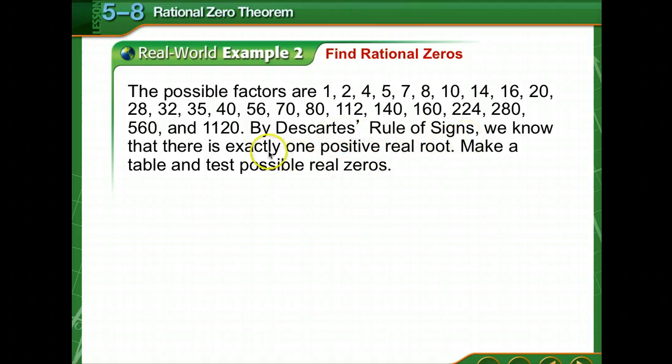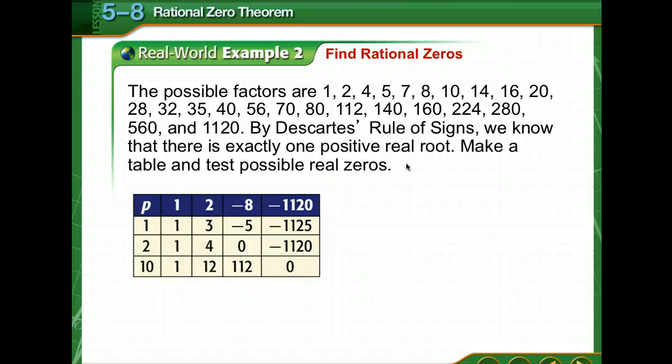By Descartes' rule of signs, we know that there is exactly one positive real root. We make a table to test possible real zeros. We find one at 10.